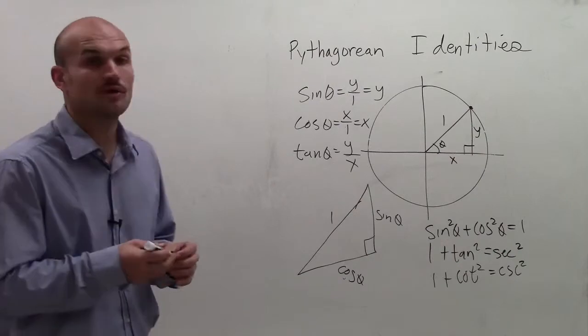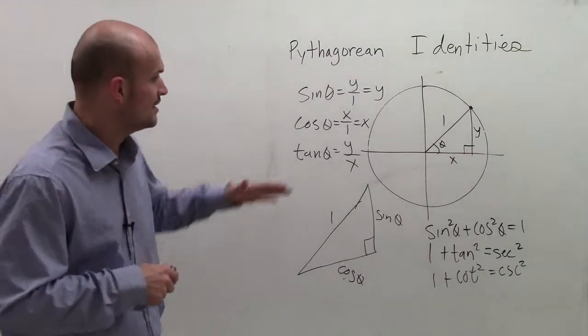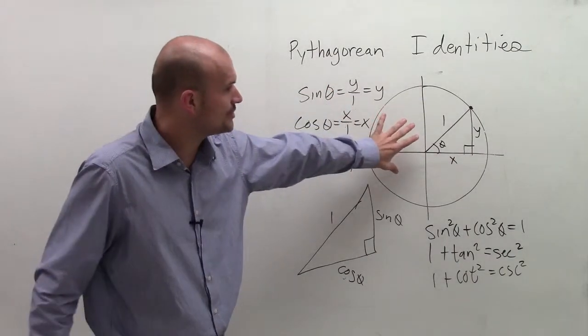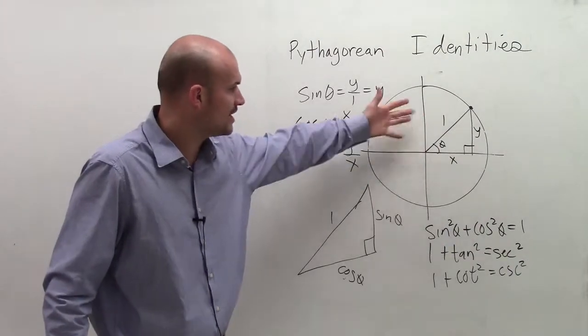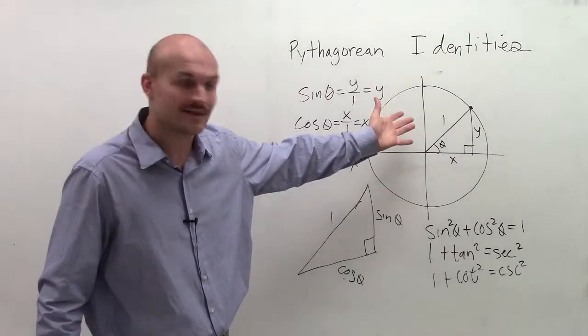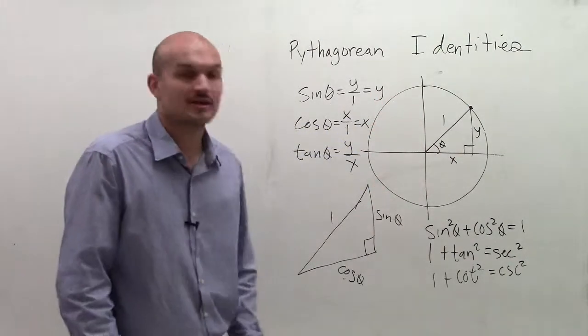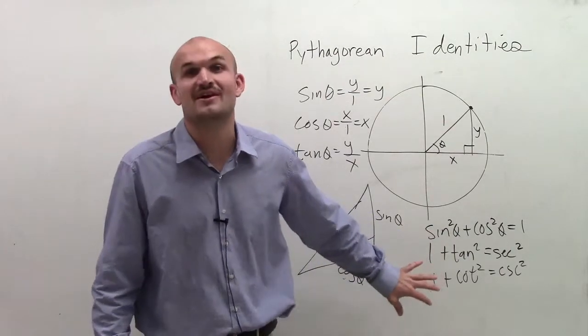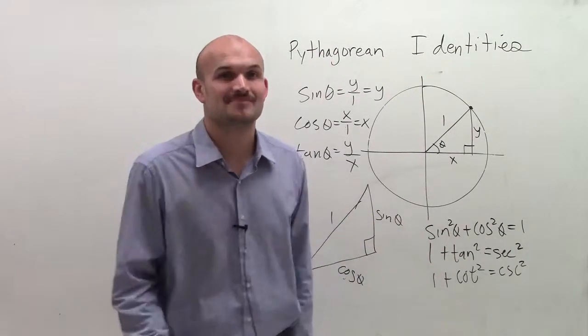There you go, ladies and gentlemen, those are your three Pythagorean identities. They come from our unit circle and triangle, and also using the Pythagorean theorem with our trigonometric functions. Please remember these—they're going to be very helpful later on in the year. Thanks so much, bye.